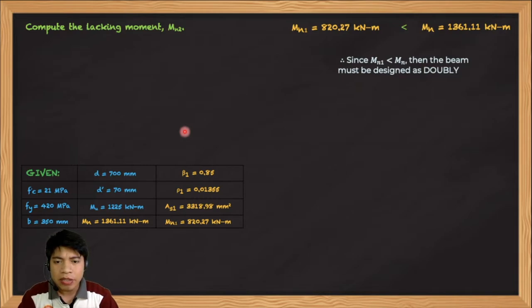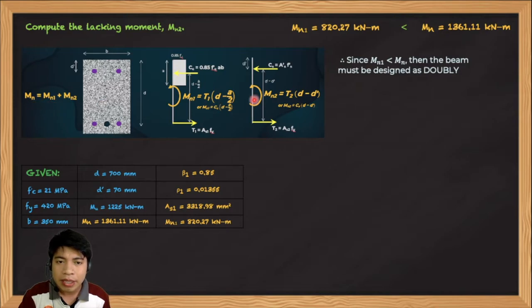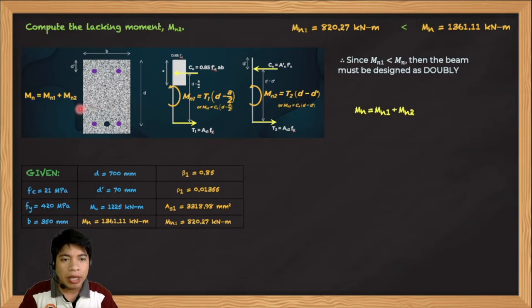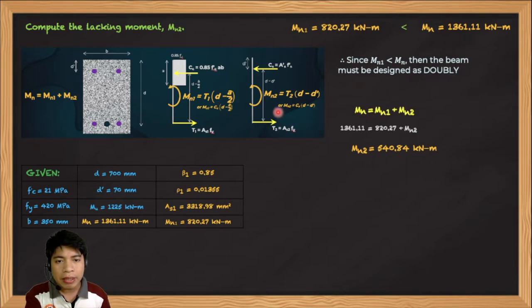Since MN1 < MN, there is a lacking moment. Using MN = MN1 + MN2, we solve for MN2 = MN − MN1 = 1,361.11 − 820.27 = 540.84 kN·m. This MN2 is the additional nominal moment that must be resisted by the extra reinforcement on both the tension and compression sides.